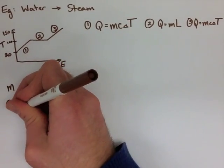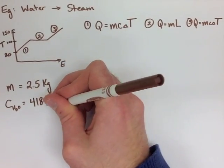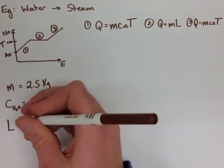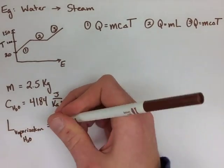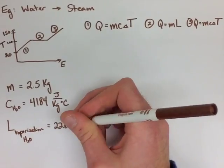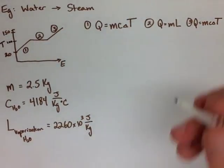So we put in our mass of 2.5 kilograms. Our specific heat of water is 4,184 joules per kilogram degrees Celsius, and our latent heat of vaporization is 2,260 times 10 to the 3 joules per kilogram.